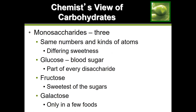For monosaccharides, we have three of them. Glucose, which is what we call our blood sugar — when you get your blood sugar tested, they're testing for how much glucose is in your bloodstream. The next one is fructose, which we refer to as fruit sugar because it's most commonly found in fruits. It is naturally occurring in fruits, and it can also be added to other foods.